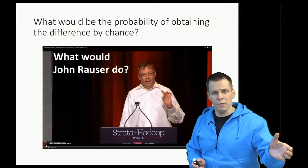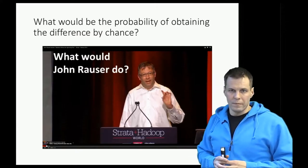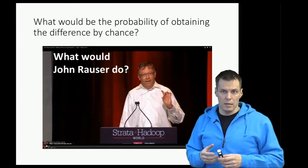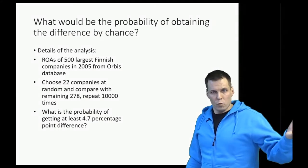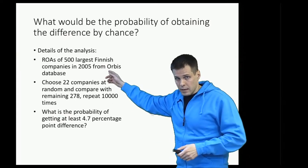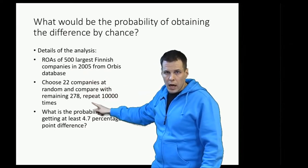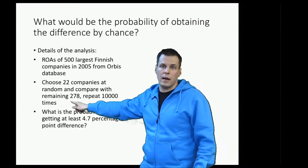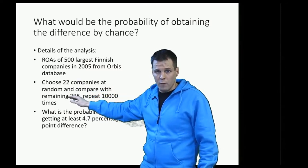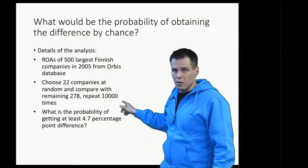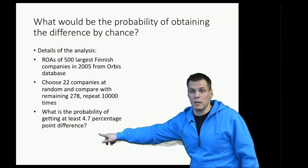One strategy for answering that question is to do a permutation analysis or permutation test, which is a fairly intuitive way of understanding statistical testing. We take the list of companies, choose 22 at random, compare them with the remaining 478, and calculate the difference. We repeat this 10,000 times and see what the probability is of getting at least a 4.7 percentage point difference in these comparisons.